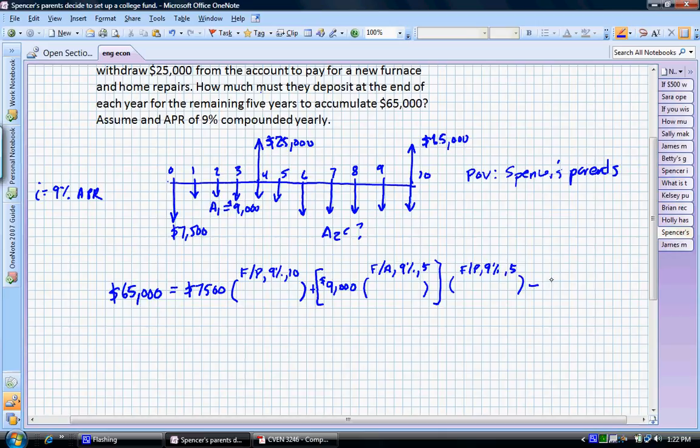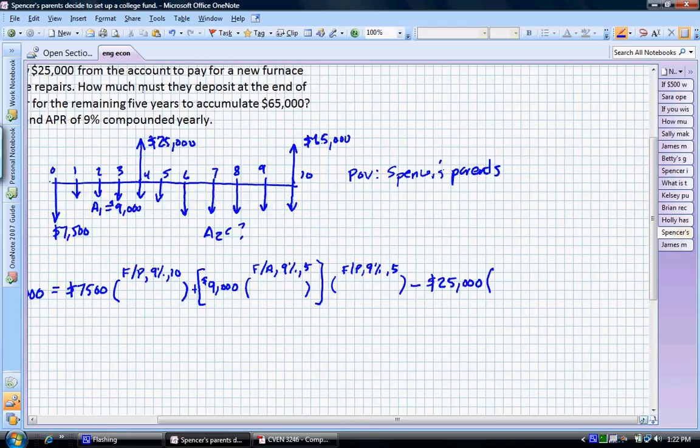What we need to do now then is we need to subtract the $25,000 that we would have been earning interest on and multiply that by the F/P factor. The F/P factor at 9% and that would have been earning interest for six years. So our period is six years. Remember, we withdraw in four years. We're trying to convert all these values to future values in year 10. So there are six years that that would have been earning interest that it no longer is.